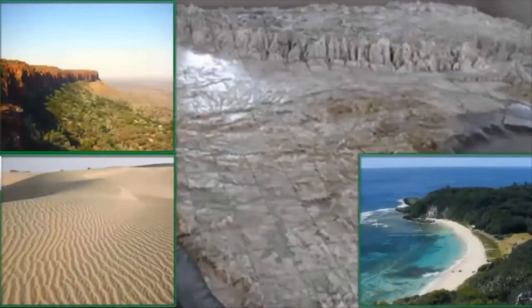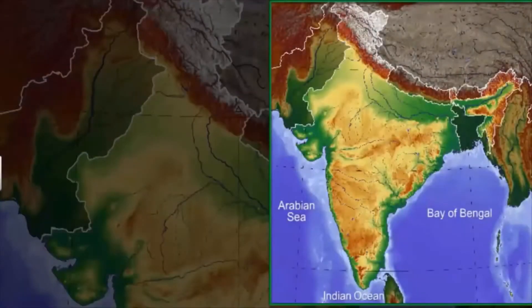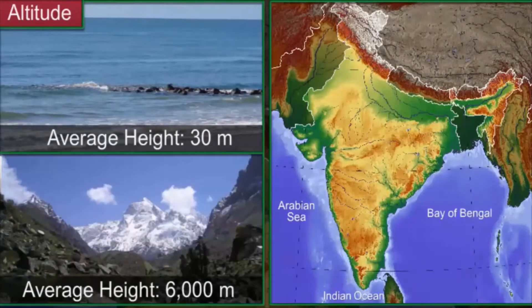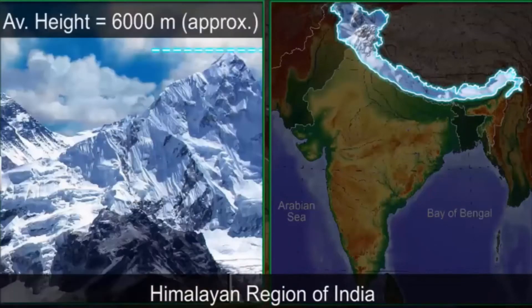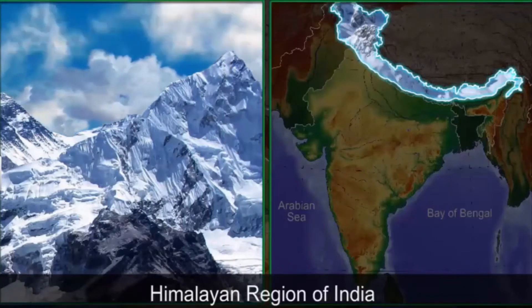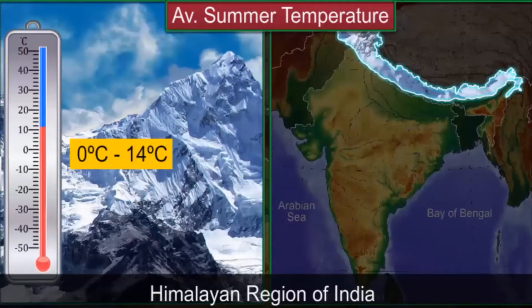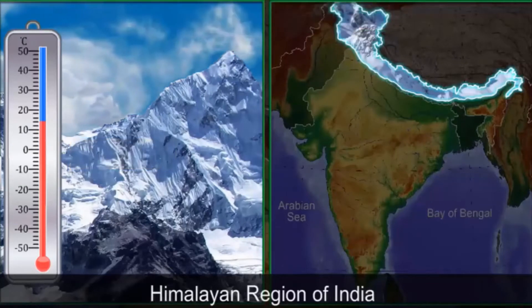Let us now examine how the altitude and relief features influence the climate of India. In India, the elevation of land ranges from 30 m to 6000 m. The Himalayan mountains to the north of India have an average height of about 6000 m. The average summer temperature on the Himalayas can vary from 0 degrees Celsius to 14 degrees Celsius, while winters can see the temperature dipping below freezing point with heavy snowfall.